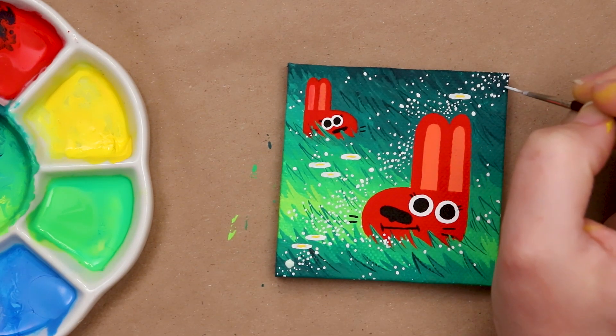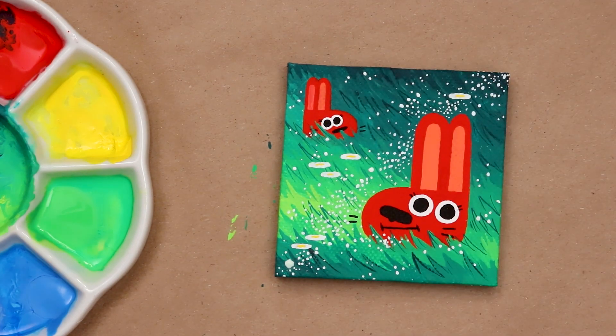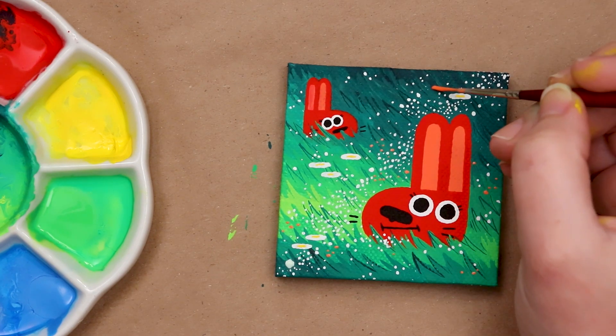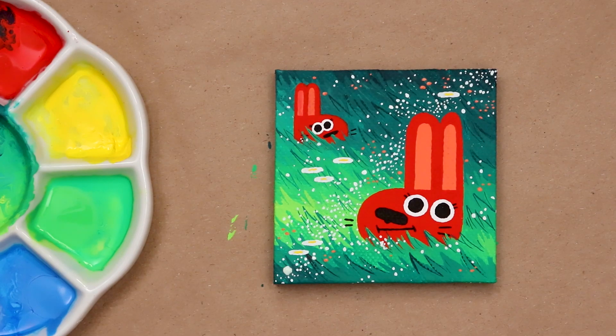That's enough for our little white flowers. I think it's time to add just a few pink flowers. A few here, a few here, a few here. And that's it for our first blob. I think it turned out super cute. Two little bunnies in the grass.